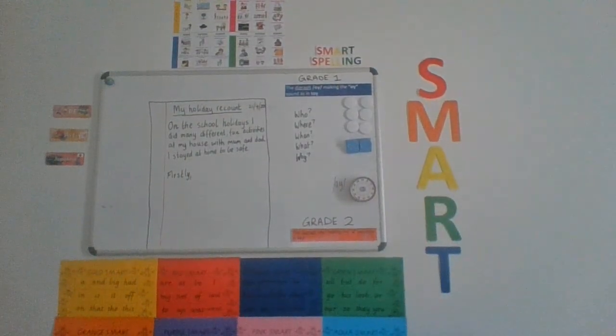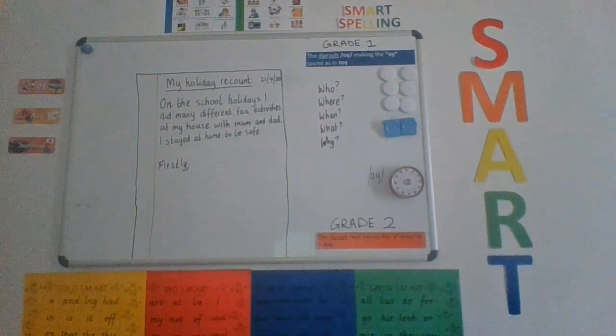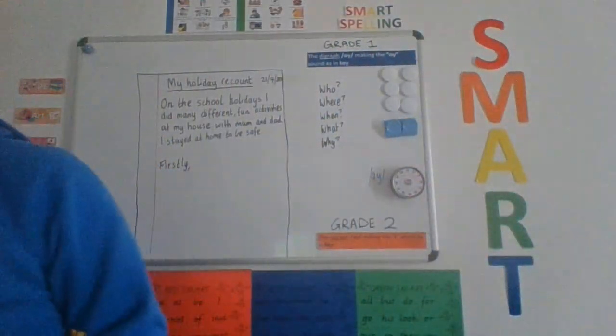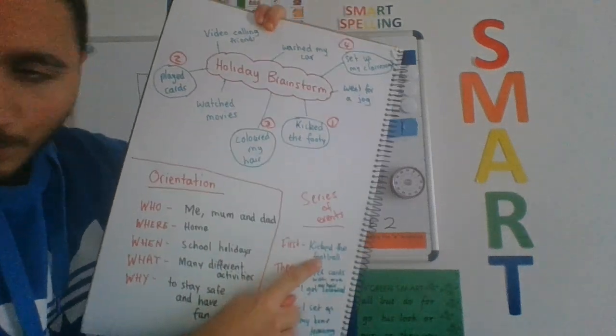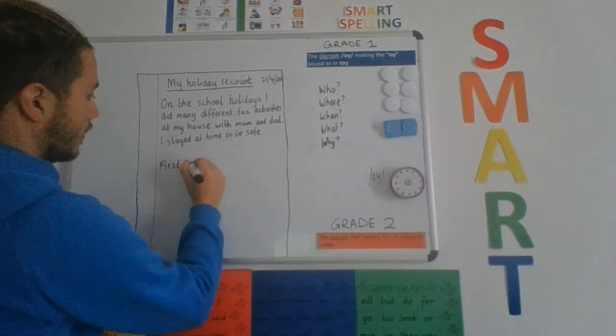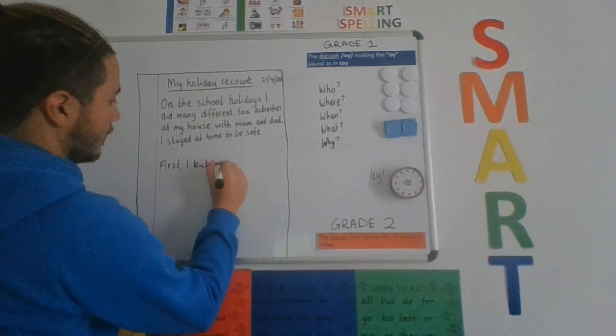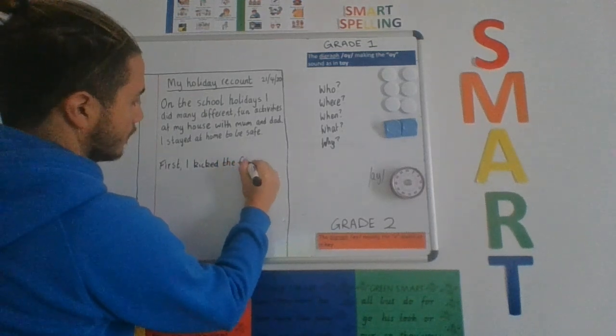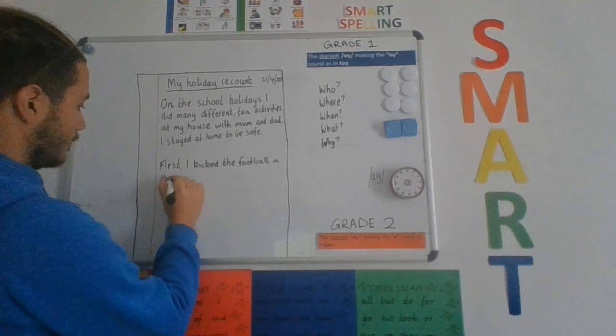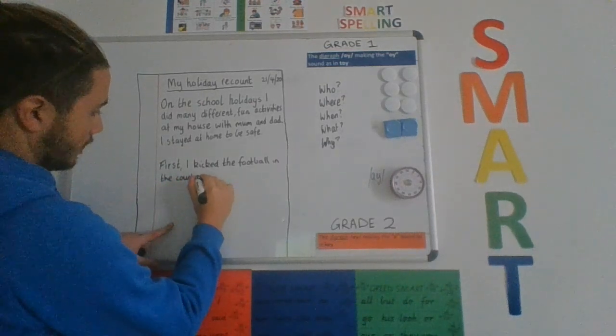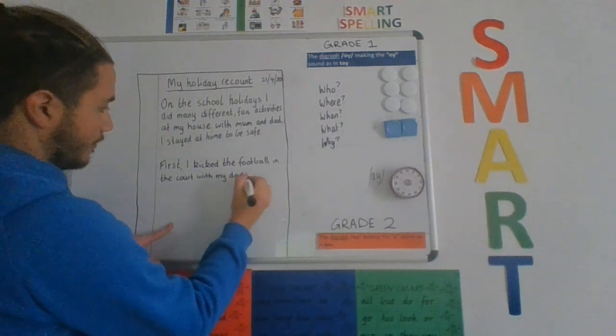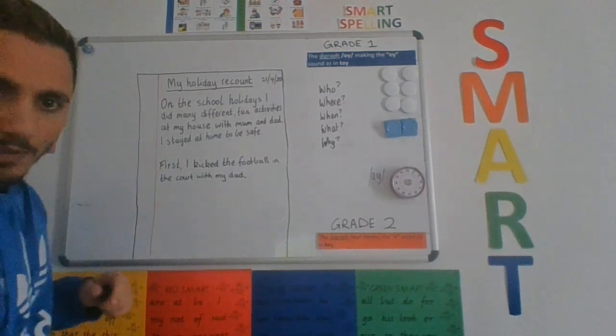I'll bring it a little bit closer. Okay, so I've got my orientation there, and then I'm going to start with firstly. The very first thing that I did was I kicked the football, so I'm going to write that down next into a sentence. So, first, first kicked the football in the court with my dad.